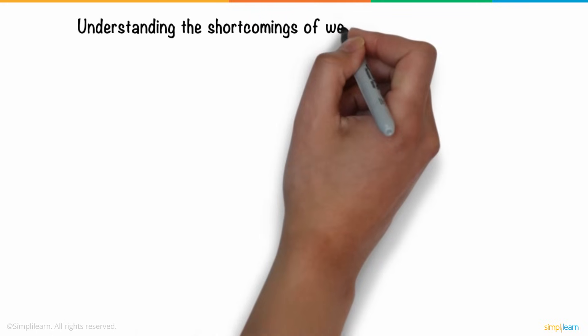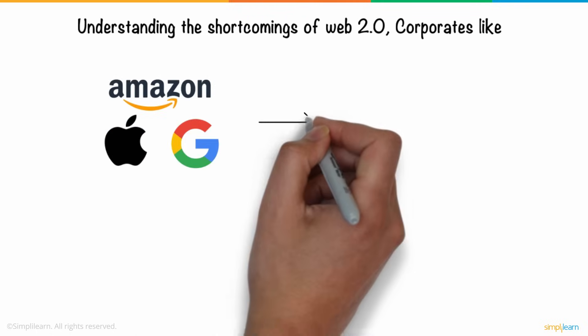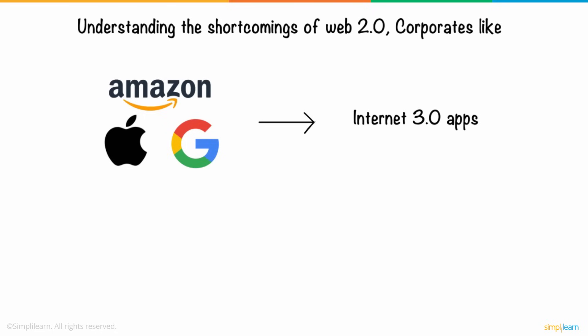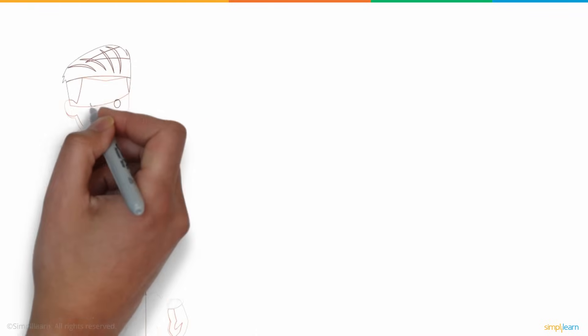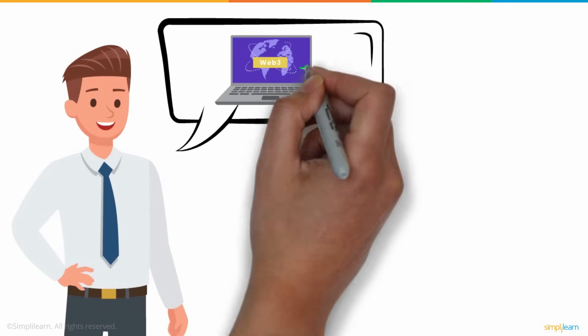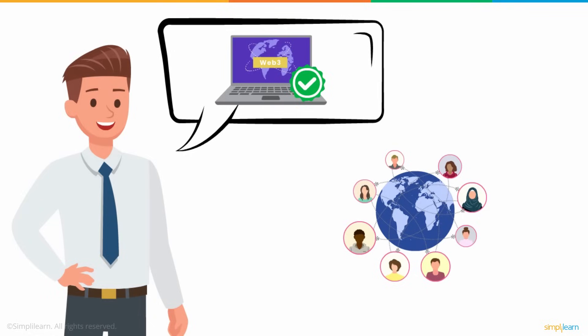Understanding the shortcomings of Web 2.0, corporates like Amazon, Apple, and Google are transforming their existing services into internet 3.0 apps that abide by these four principles. Siri and Wolfram Alpha are two applications that use Web 3.0 features. After learning about this, Ray was relieved by the fact that Web 3.0 is going to bring so much of a difference, not just in his life, but also to the society as a whole.